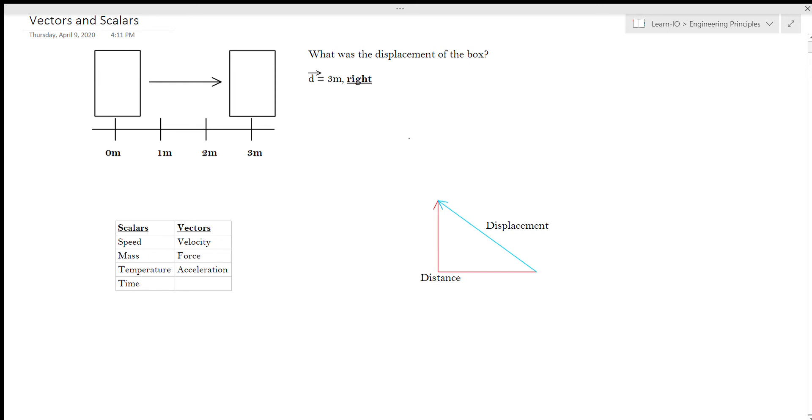And before I continue, I just want to explain the difference between displacement and distance real fast. So if you could just divert your attention to this triangle over here, just to demonstrate what the difference is. So let's say we have a man who starts off at the bottom right around here and ends up right at the top up here.